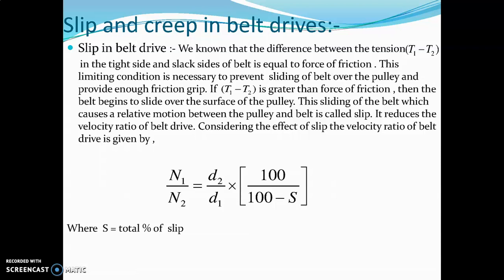If the difference in tension is greater than the force of friction, then the belt begins to slide over the surface of the pulley. This sliding of the belt causes relative motion between the pulley and belt. This is called slip. The condition is: T₁ minus T₂, the tension difference, is equal to the force of friction.